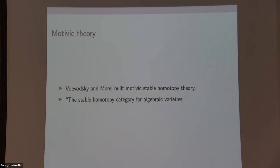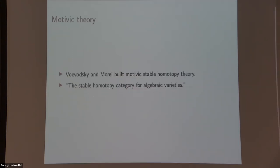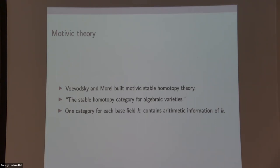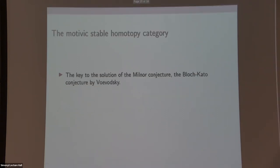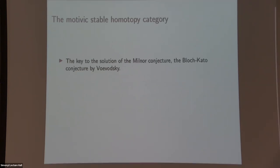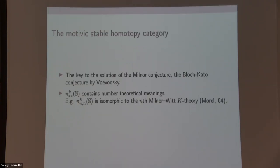The motivic theory is about algebraic varieties. It has algebraic geometric roots. You can think of the motivic stable homotopy categories to be stable homotopy categories for algebraic varieties. For each base field K, you have smooth schemes over K. Similarly, for each base field K, you have a different category. The structure in that category encodes the arithmetic information of the base field. The motivic category has applications in number theory and algebraic geometry. This is the key to the solution of Voevodsky's solution to the Milnor conjecture and Bloch-Kato conjecture. On the other hand, because this is a stable homotopy category, it also makes sense to talk about the homotopy groups of the sphere, the stable homotopy groups of the sphere.